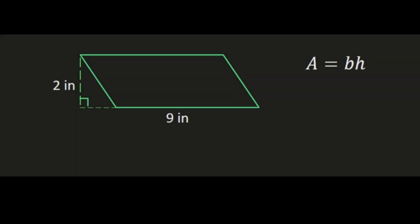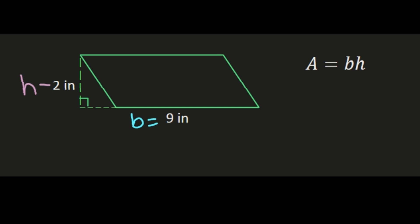In this example we're going to find the area of our parallelogram using the formula area equals base times height. One thing to note here is that the height is drawn on the outside of the parallelogram. We have a base of 9 inches, and the height is drawn outside the parallelogram — perpendicular to our base — so that's going to be 2 inches. It doesn't matter whether they draw it on the outside or the inside; the height is still from the opposite side perpendicular to the base.